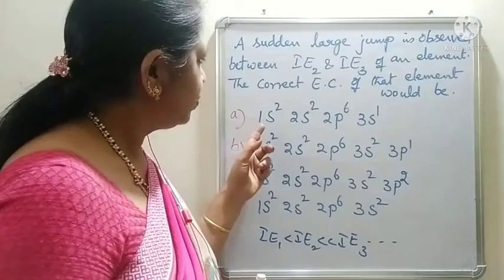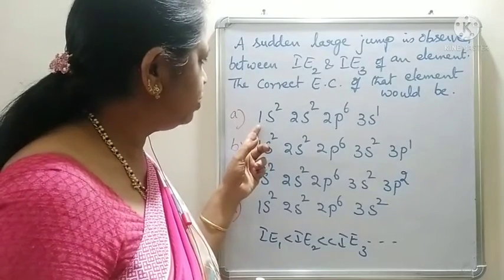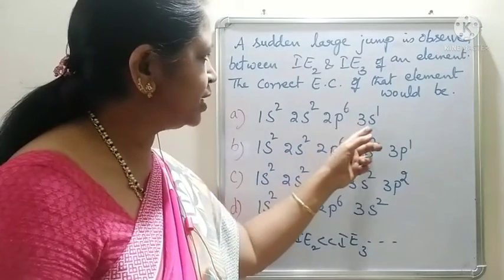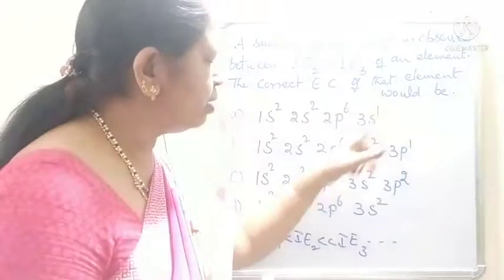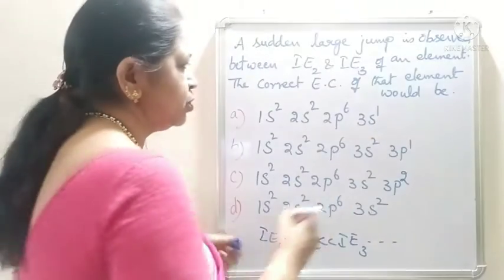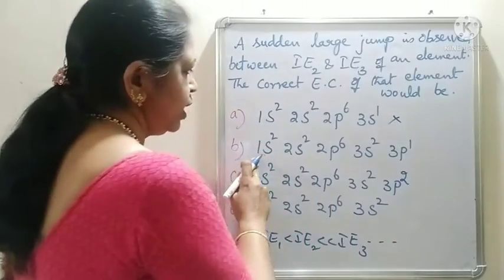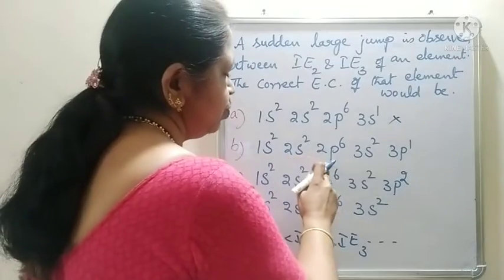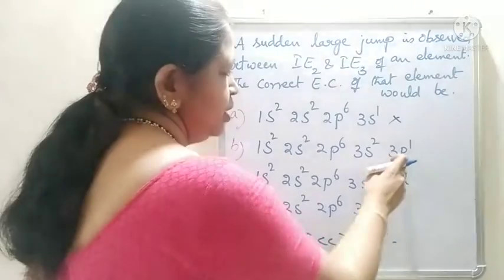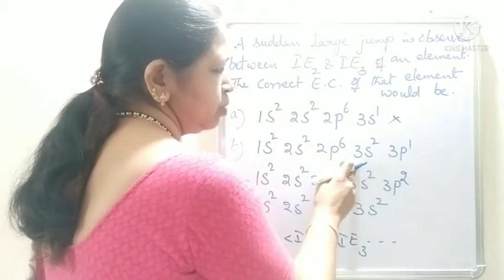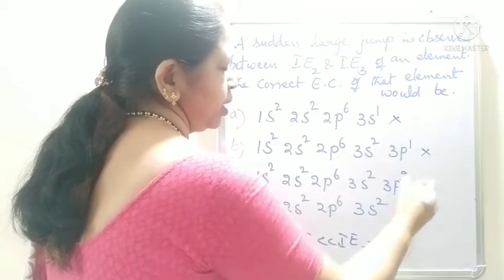Among the options, in option A — 1s², 2s², 2p⁶, 3s¹ — there is only one electron in the outermost orbit, so this is not correct. In option B — 1s², 2s², 2p⁶, 3s², 3p¹ — three electrons are present in the outermost orbit, so it is also not correct.